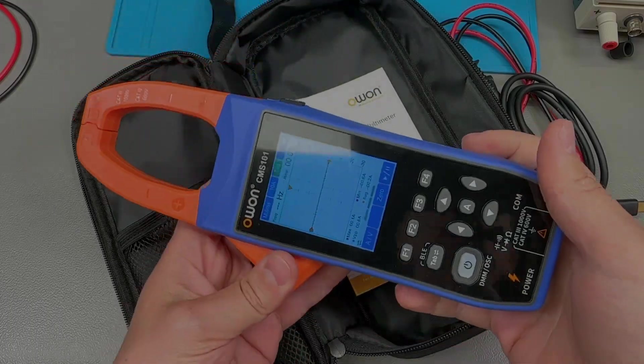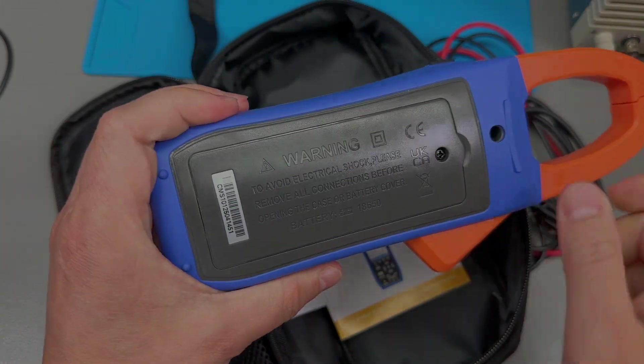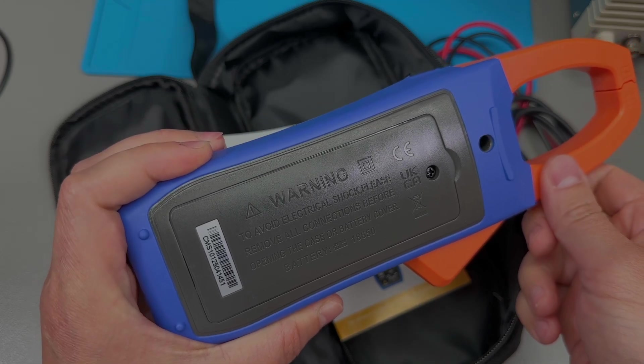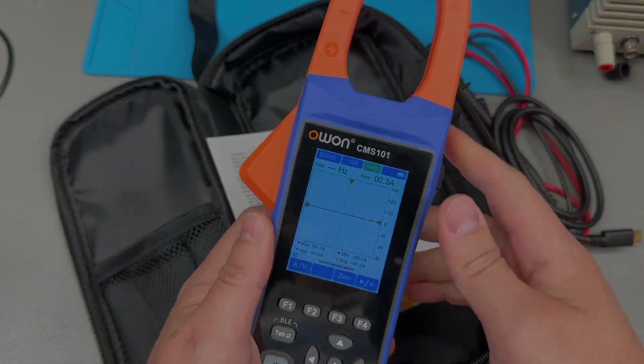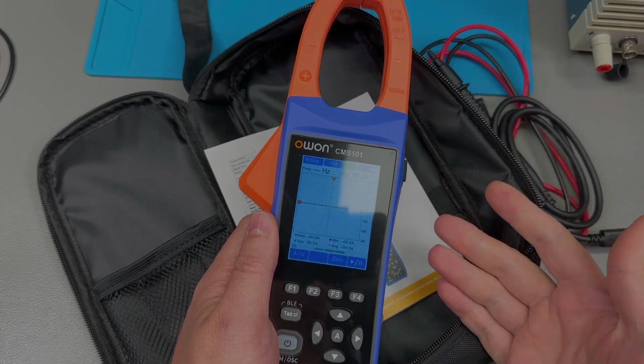As you'll notice, the unit is physically quite large and is powered by an internal rechargeable lithium ion 18650 cell which comes pre-populated and should give you an estimated maximum run time of 18.5 hours with a charge time to full of 8 hours.